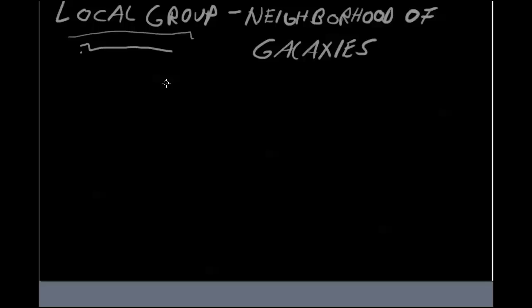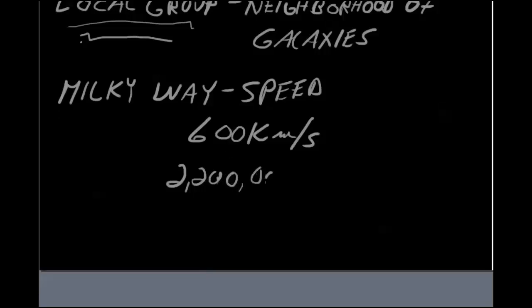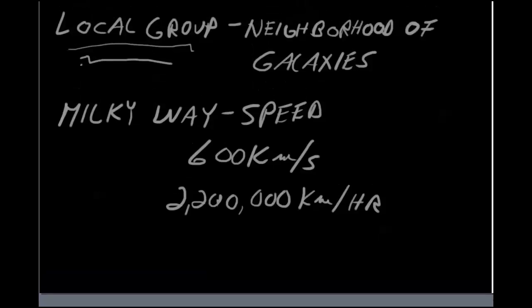If you want to think about it, the Milky Way along with everything else is moving through space. And the Milky Way is moving through space. It's part of the Local Group. And it's moving at about 600 kilometers per second. So, the Milky Way speed is about 600 kilometers per second. Or, if you want to think of another term, about 2,200,000 kilometers per hour. So, interesting tidbit here, that everything is moving.